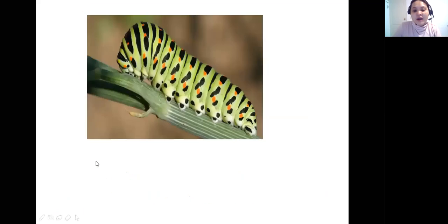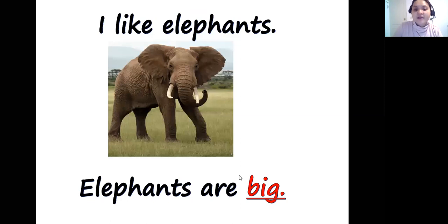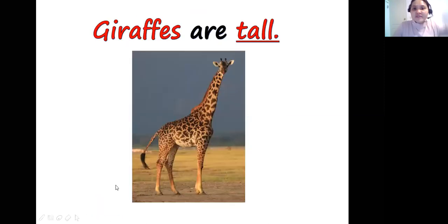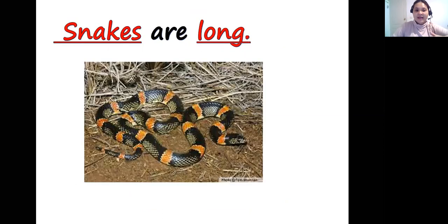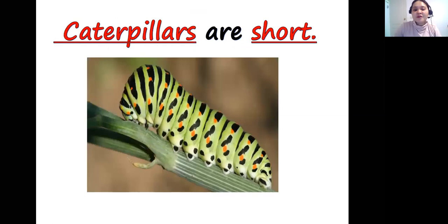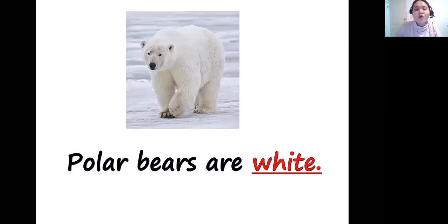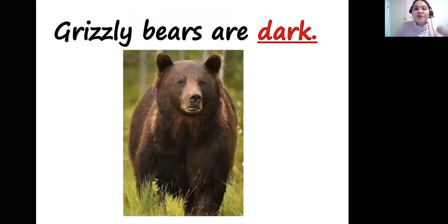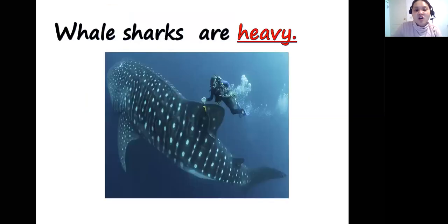In describing them: elephants are big, bears are big, giraffes are tall, deers are short, snakes are long, caterpillars are short, lions are wild, polar bears are white, grizzly bears are dark, frogs are noisy — they make lots of sound — and whale sharks are heavy. Thank you, that's all for now, goodbye everyone!